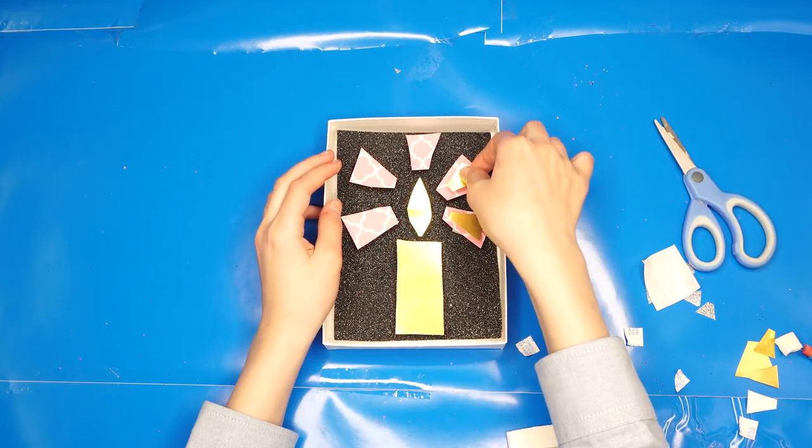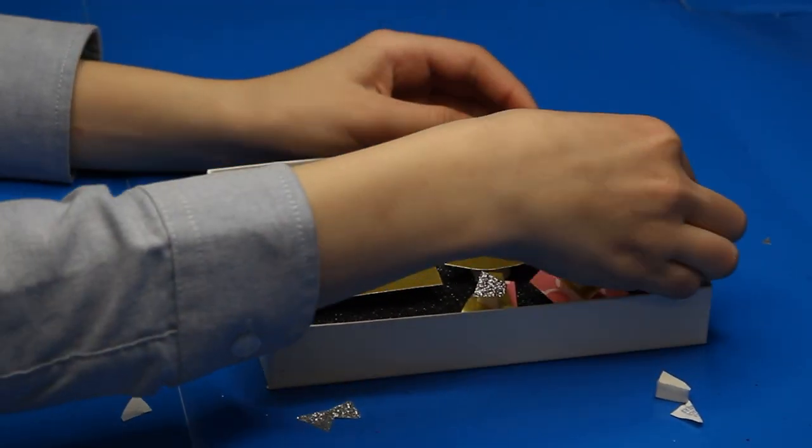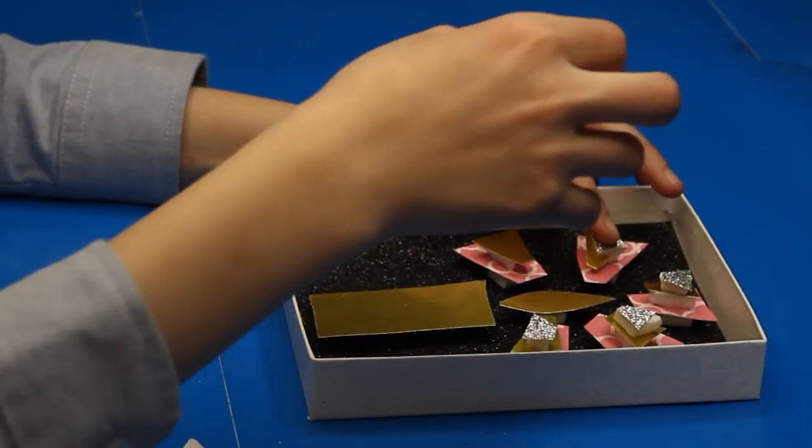To make the foam stickers smaller to fit the rays, you can cut them in half. Stick the next size rays on top of the larger ones and the smallest ones on top of that.